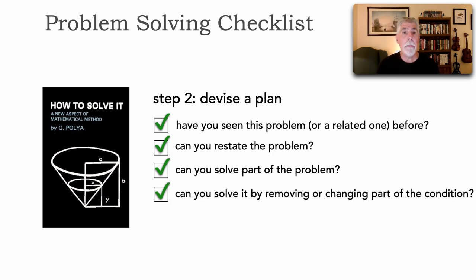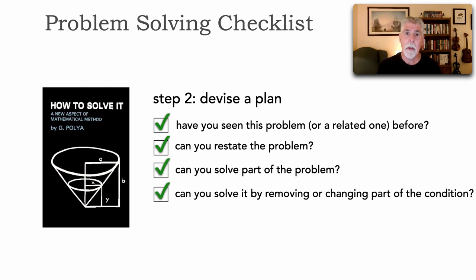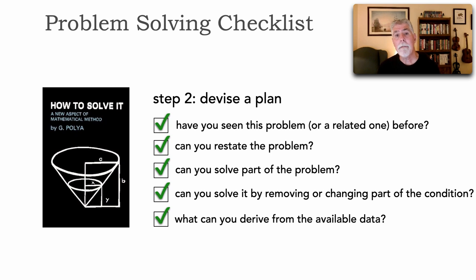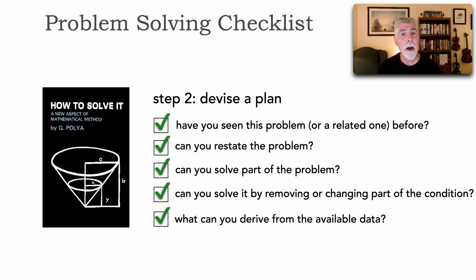Also, can we solve it by changing something — restating or changing part of the condition? Sometimes problems are so complex we get overwhelmed by the number of conditions. If we remove some of those complex conditions, solutions start coming to us, and then we apply those conditions back. It's a great way of approaching the problem. Also: what can we derive from the available data? Most of the time we don't have all available data — we have to derive additional data from what we have.